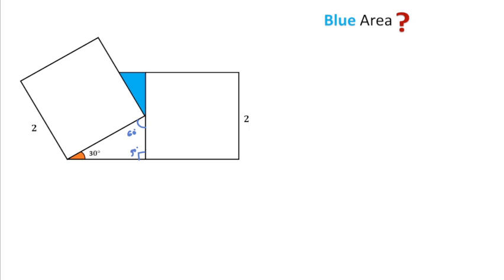And if we consider this side length as x, then using trigonometry in this triangle we can write sin 30 degrees equal to perpendicular, that is x, over hypotenuse. Hypotenuse will be the side of this square, which is 2.